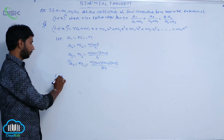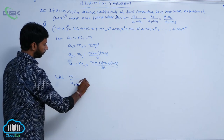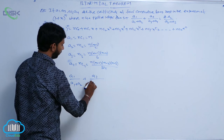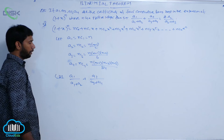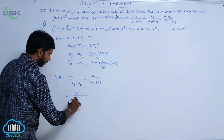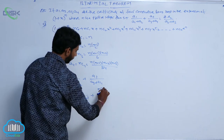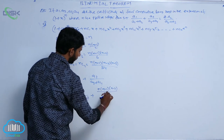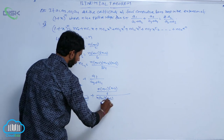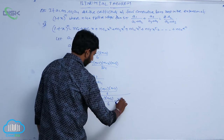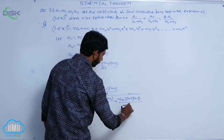Taking LHS, that is a1/(a1+a2) + a3/(a3+a4), substitute the values of a1, a2, a3, a4: that is n / [n + n(n−1)/2] + [n(n−1)(n−2)/6] / [n(n−1)(n−2)/6 + n(n−1)(n−2)(n−3)/24].